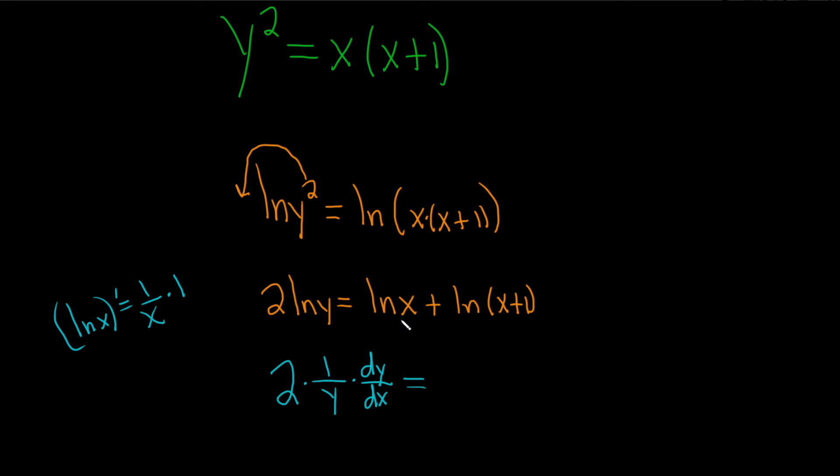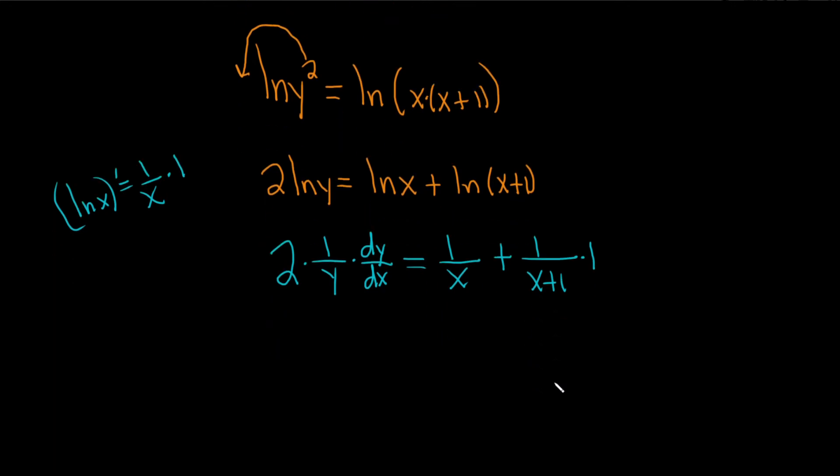and we do the same thing over here, the derivative of ln x is 1 over x, plus, here we use the chain rule, so it's 1 over x plus 1, times the derivative of the inside, which is 1, so times 1. Okay, let's keep going.